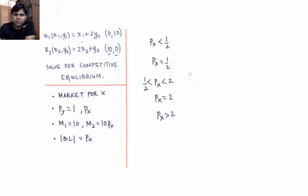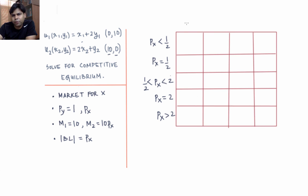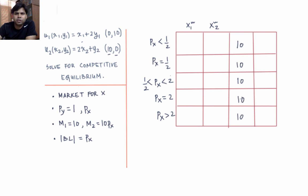We will check each case separately to see at what price of x the market for x clears. The first column records demand for commodity x by individual 1, the second column demand by individual 2, the third column supply which is always 10 regardless of price — there are 10 units of x in this economy — and the fourth column shows the result of comparing demand with supply.